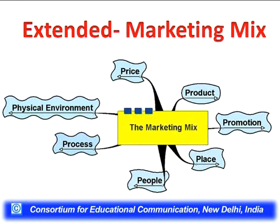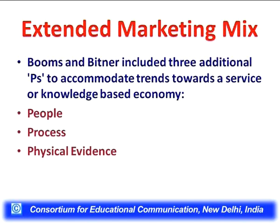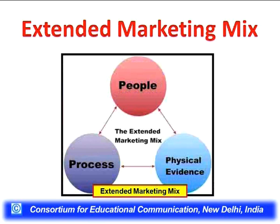So three more P's are added to the original marketing mix — now instead of four P's, we talk about seven P's. The marketing mix now covers: price, product, promotion, place, people, process, and physical environment. This is the extended marketing mix. Booms and Bitner included three additional P's to accommodate trends towards a service or knowledge-based economy: people, process, and physical evidence.